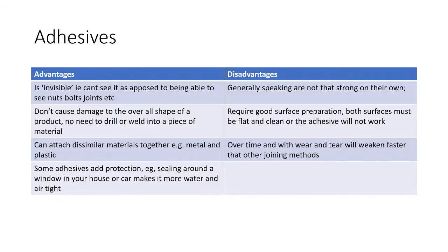First, adhesives — there are advantages and disadvantages. The main advantage is that the joint is invisible, so you don't see any nuts and bolts sticking out, which can be aesthetically pleasing. It doesn't damage the original shape — you're not drilling or welding. It also lets you attach dissimilar materials together, such as metal to glass, metal to plastic, or plastic to wood. Some adhesives add protection by sealing, making things watertight, like sealant around window frames or bathtubs.